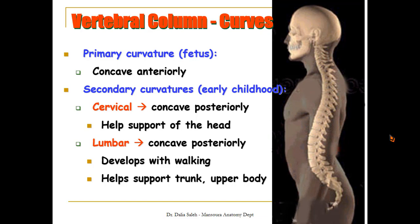This is the final shape of the vertebral column curves in the adult, in this side view. The primary curves are still present in the thoracic and pelvic regions, while the secondary curves appear in the cervical and lumbar regions.